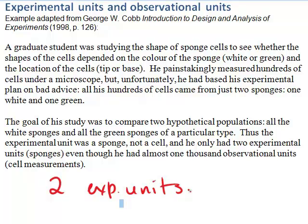An observational unit is the smallest object that we actually measure. We can measure the shape of every cell we collect from a sponge, and this is exactly what he did — hundreds of times. But what we really have is lots of measurements about just two sponges. We know a lot about those two sponges but very little about sponges in general, because we've only studied one white and one green sponge — just two experimental units. A far better study would have had many experimental units, many sponges, so that we'd have information about sponges in general.